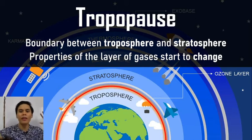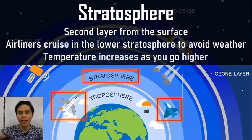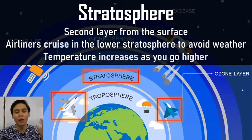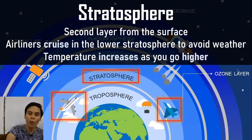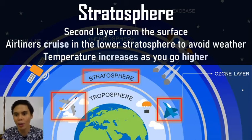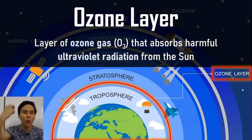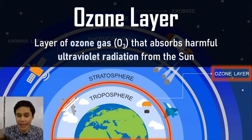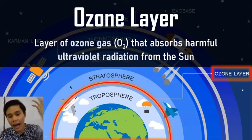The tropopause is the boundary between the troposphere and the stratosphere, where properties start to change. In the stratosphere — the second layer from the surface — airliners and jet planes tend to cruise because in the lower stratosphere there's no weather and it's not too difficult to climb to that altitude. Temperature increases as you go higher because of the ozone layer. The ozone layer is a layer of ozone gas (O3) that absorbs harmful ultraviolet radiation from the sun, protecting us. The energy from that UV radiation gets trapped in the stratosphere, which is why it gets hotter as you go higher there.